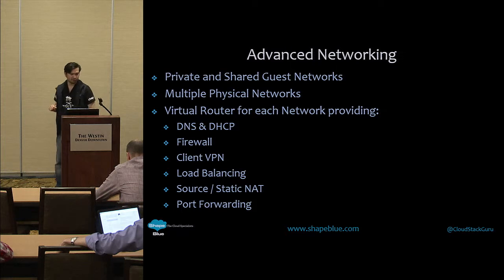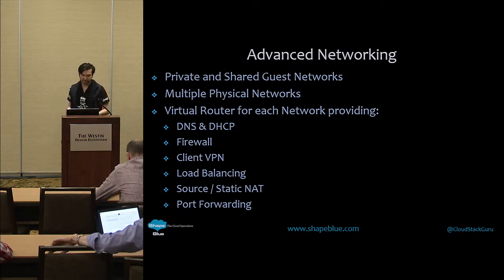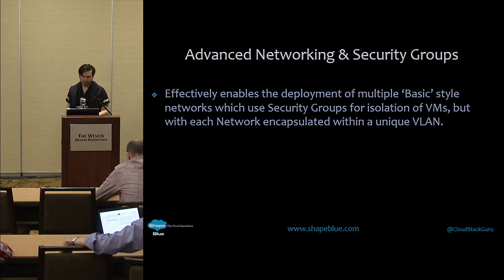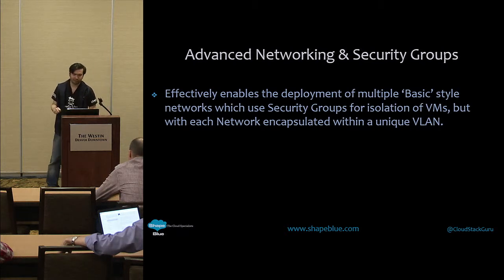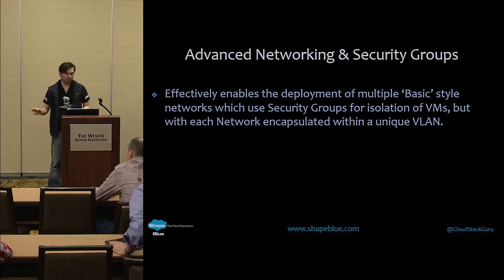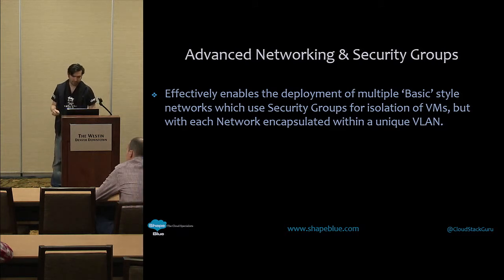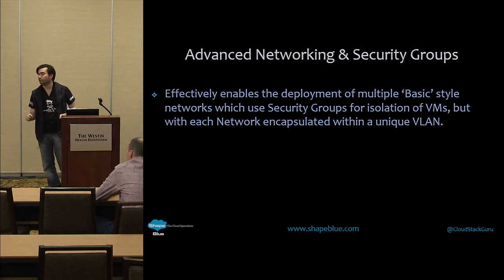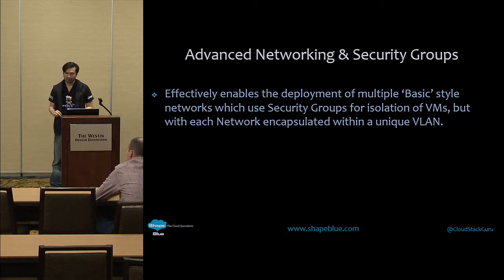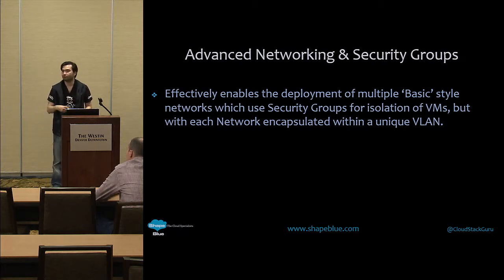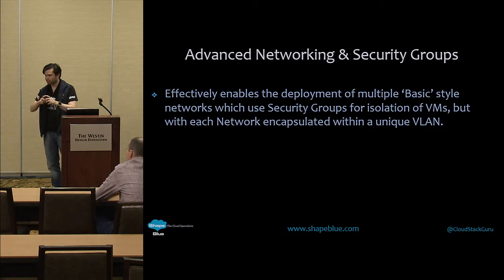Because we have a virtual router, that allows us to bring in a whole new set of features: firewalls, client VPN, load balancing, source static NATing, and port forwarding. We also have a twist — advanced networking with security groups. A use case I discussed earlier: a client didn't like all their traffic running through a single virtual router, thinking of tens of thousands of transactions per second. By using VLANs plus security groups, they could get VLAN separation but still use security groups for multiple tiers in their networking model.